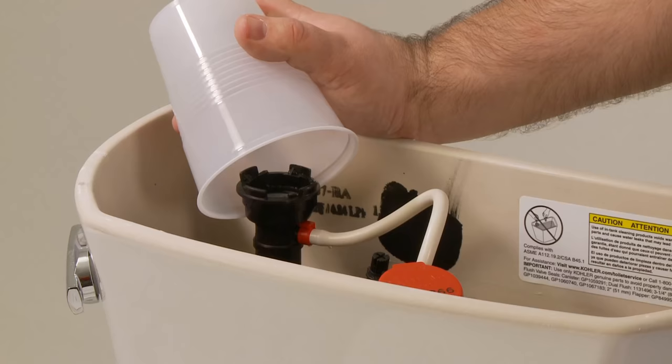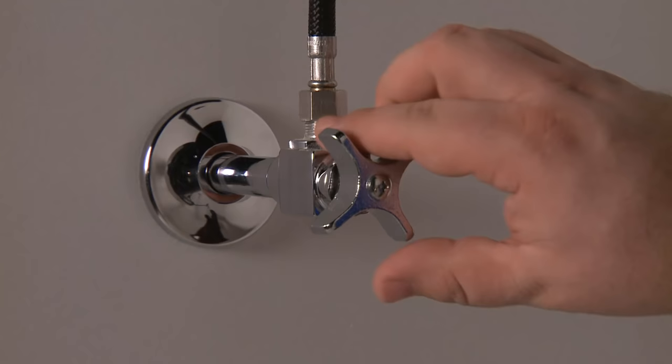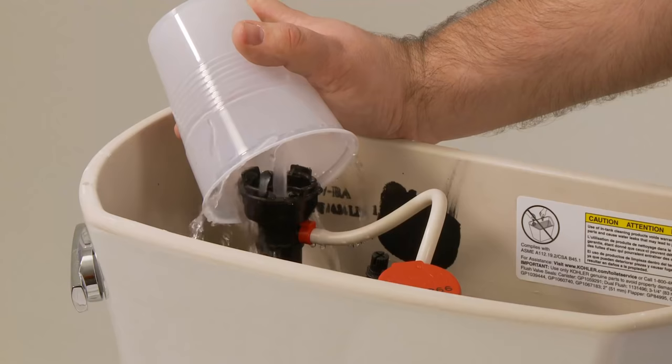With the cap removed, cover the valve unit with an inverted plastic cup to avoid getting sprayed. Then turn on the water supply and allow it to flush the valve for about 30 seconds.